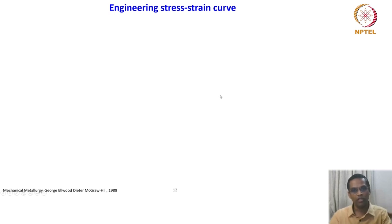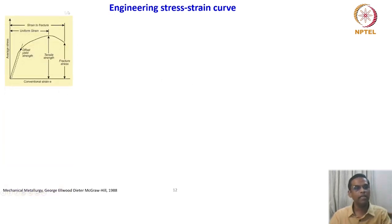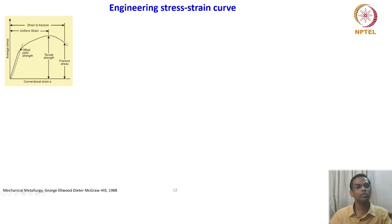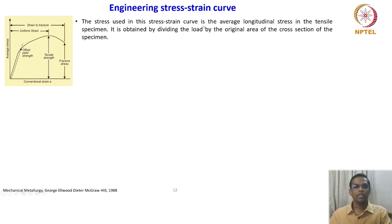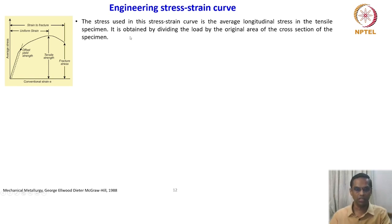We will now go to the engineering stress-strain curve. Normally in any textbook, the engineering stress-strain curve is illustrated showing average stress versus conventional strain. The average stress goes up, reaches a maximum, and comes down. The stress used in this curve is the average longitudinal stress in a tensile specimen, obtained by dividing the load by the original area of cross section of the specimen. Whenever we talk about engineering stress, we divide the load by the original area of cross section.